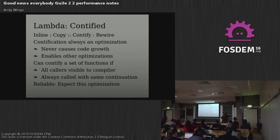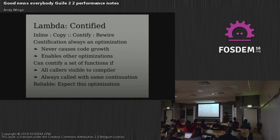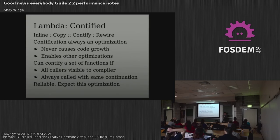Quantification rewires the function entry and function exit. Inlining is very tricky — inliners are like rabid animals you're barely restraining on a chain, because they want to cause code growth in all of your compiler. Quantification is not like that. It's always an optimization and it never causes code growth, because instead of calling out to this function you're incorporating its body into its caller. And because you do that, you enable more optimizations by turning this higher-order flow graph into a first-order flow graph.